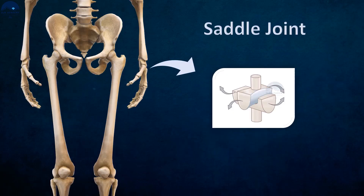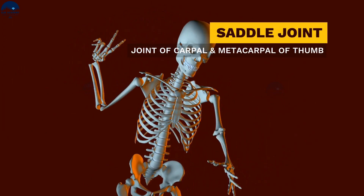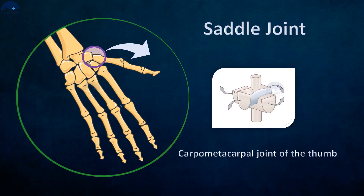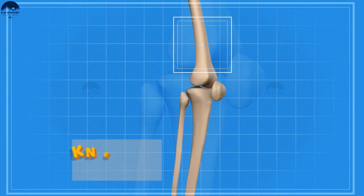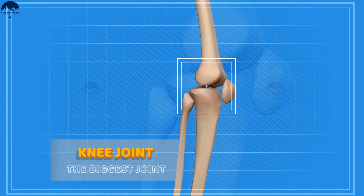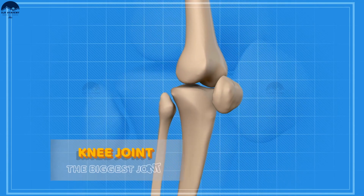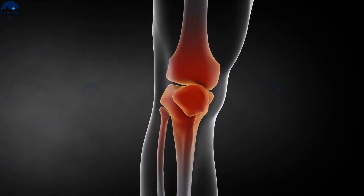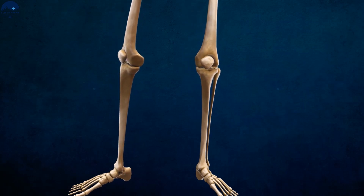In the saddle joint, the opposing surfaces are reciprocally concave and convex. It is found between the carpal and metacarpal of the thumb. Did you know what the biggest joint in your body is? At the knee joint, three bones connect: your femur, tibia, and patella. Those three large bones require an equally large joint to connect them. That is why your knee joint is the largest joint in your body.